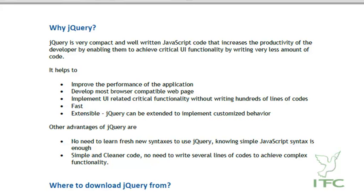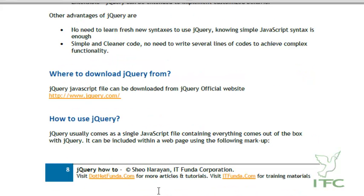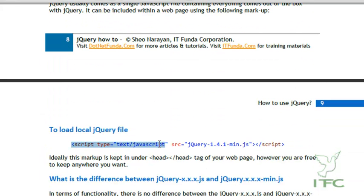Now, where do you download jQuery? The jQuery file can be downloaded from its official website, www.jquery.com. jQuery comes as a single JavaScript file containing everything out of the box. It can be included within a page using the standard script tag markup — the same markup used to include any .js file — because jQuery is nothing but a JS file.